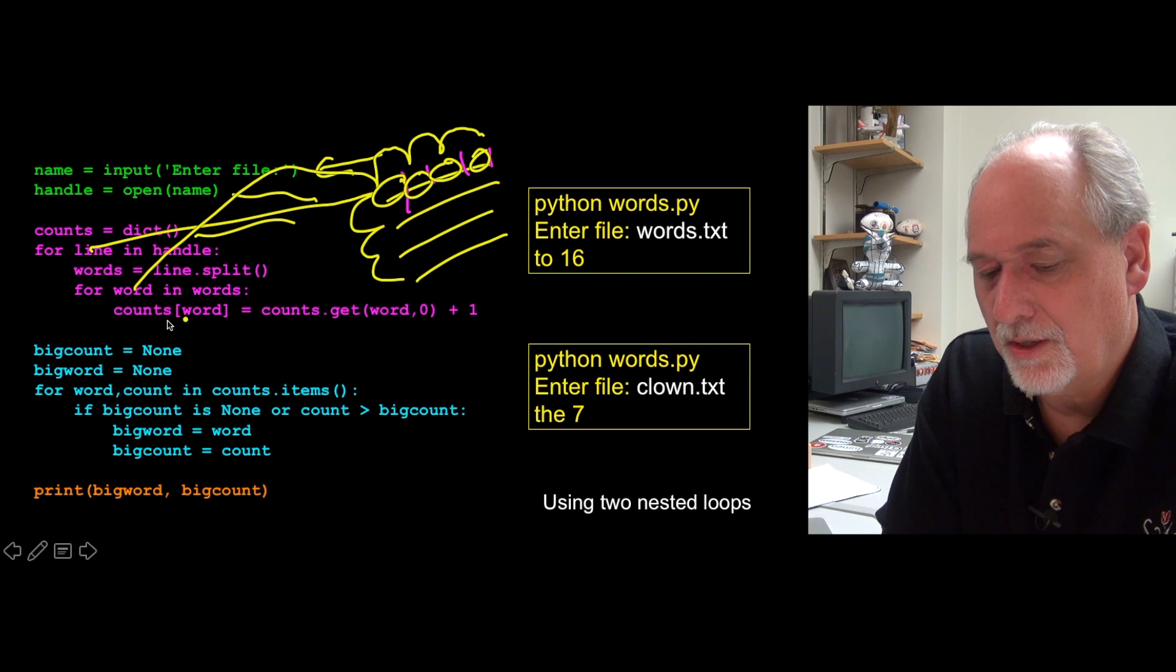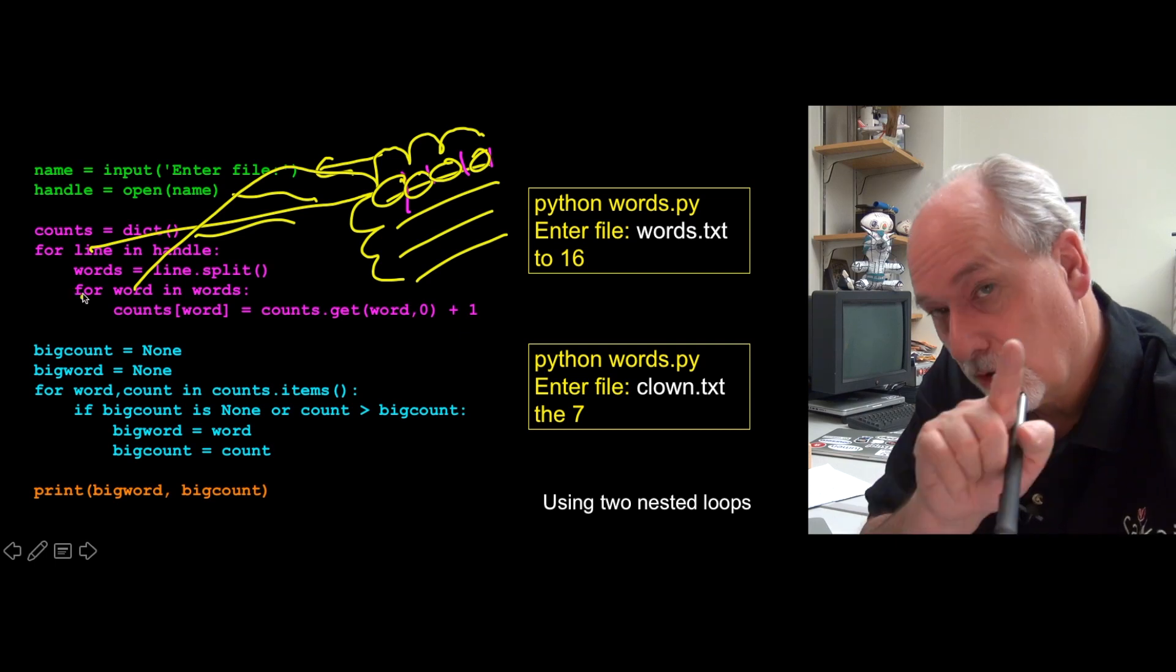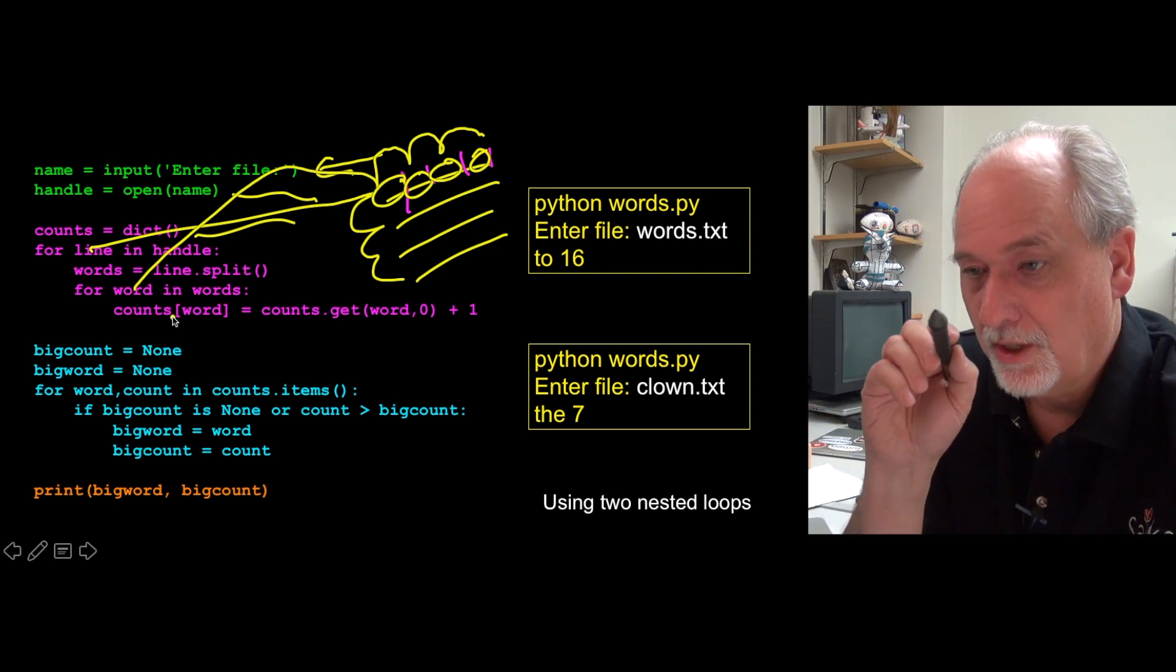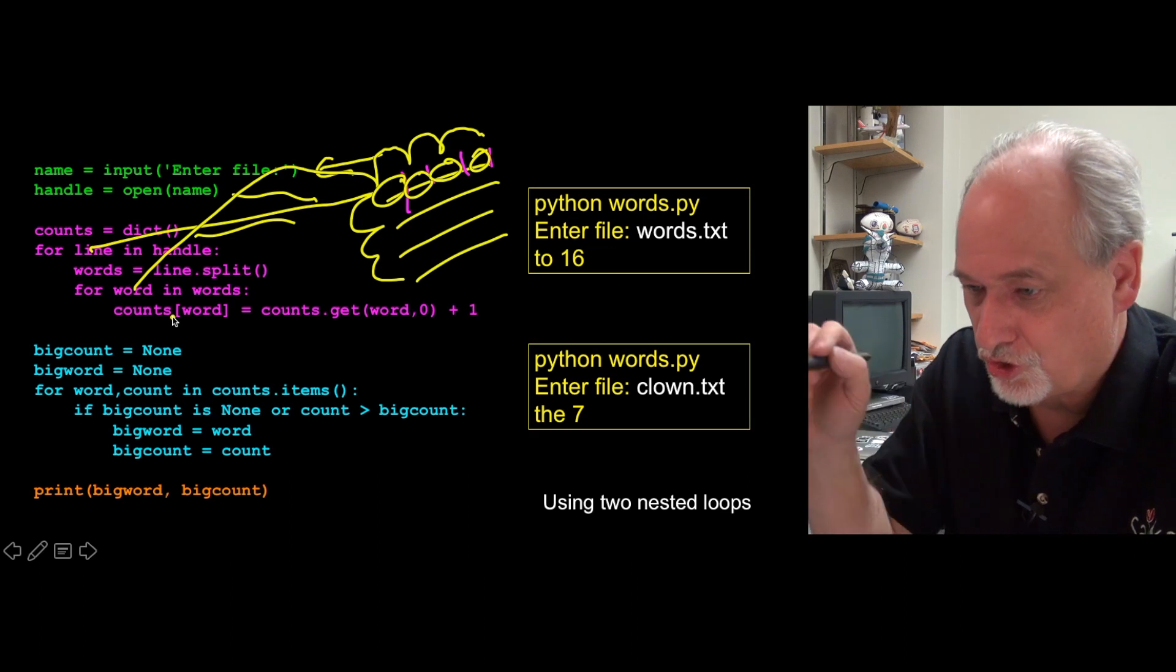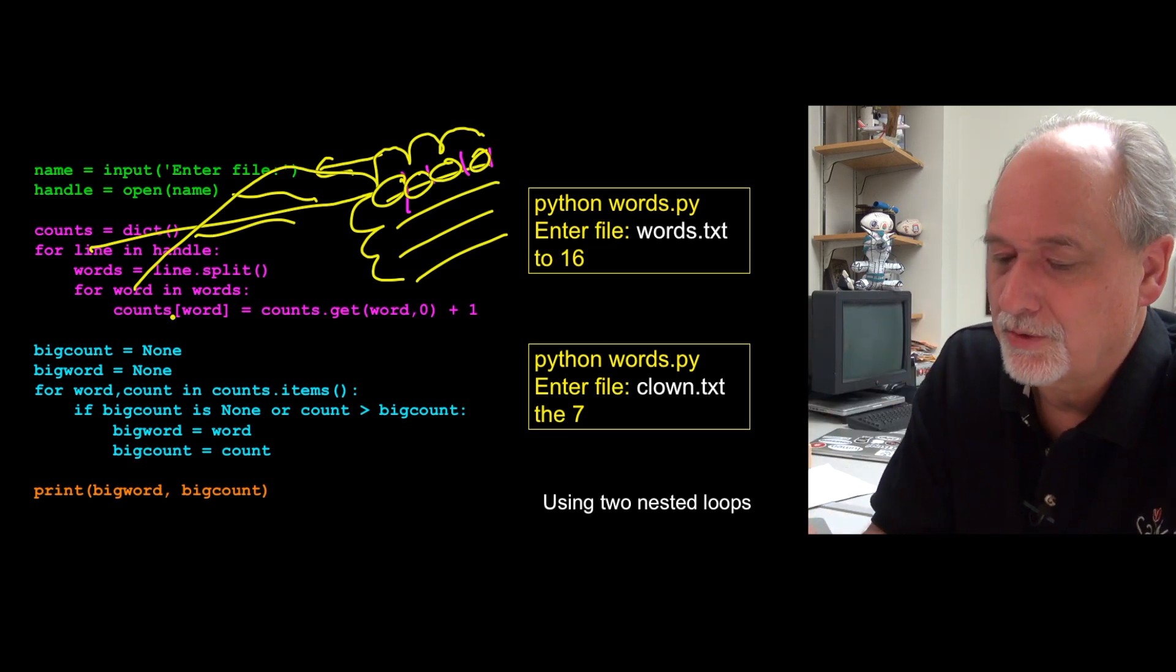And then what we're going to do is take each word in the line. And we're going to do this histogram. Right, so we're going to, this is going to run not only just for every line, but for every word in every line. So we have a nested loop for every line. Then we split it. And then we go across the line.